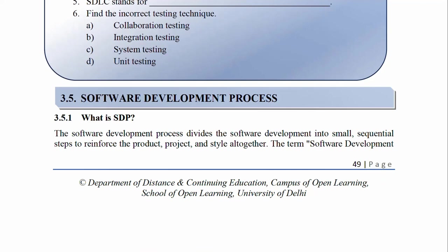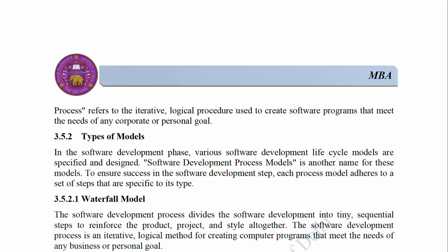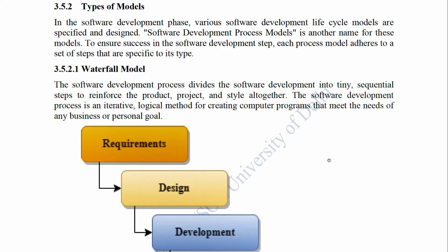3.5 Software Development Process. 3.5.1 What is SDP? The software development process divides the software development into small sequential steps to reinforce the product, project, and style all together. The term software development process refers to the iterative logical procedure used to create software programs that meet the needs of any corporate or personal goal. 3.5.2 Types of Models. In the software development phase, various software development life cycle models are specified and designed. Software development process models is another name for these models to ensure success in the software development step. Each process model adheres to a set of steps that are specific to its type.